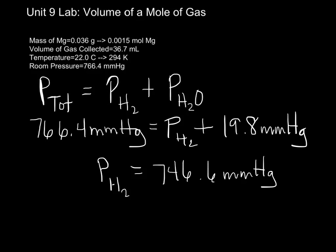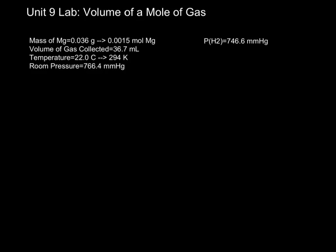The pressure of my hydrogen gas is 746.6 millimeters of mercury. We're going to need that value moving forward, so we can do our calculation. We've now added the pressure of just the hydrogen gas that we calculated before, and now we need to make some adjustments for the fact that we didn't work at standard temperature and pressure. To do that, we're actually going to use the combined gas law.